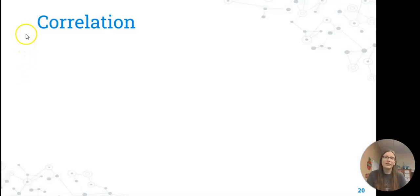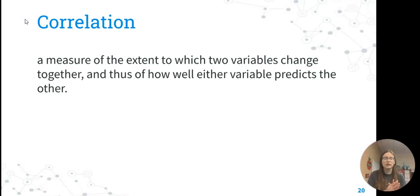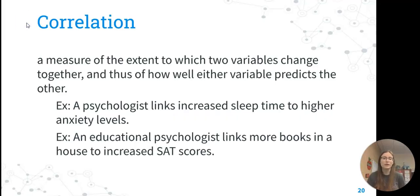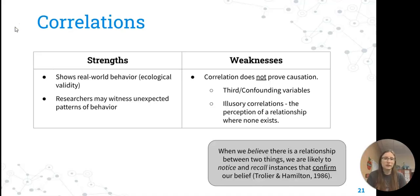Lastly, we're going to look at a correlation. Correlation is a measure of how two variables change together. It's not really cause and effect, it's just how well one predicts the other. This is something like linking sleep time to higher anxiety levels or linking having more books in a house to increased SAT scores. There could be a causal relationship between these, but we won't definitively know unless we run an experiment. Correlations are a good place to start to gather information to determine an experiment you may want to do.